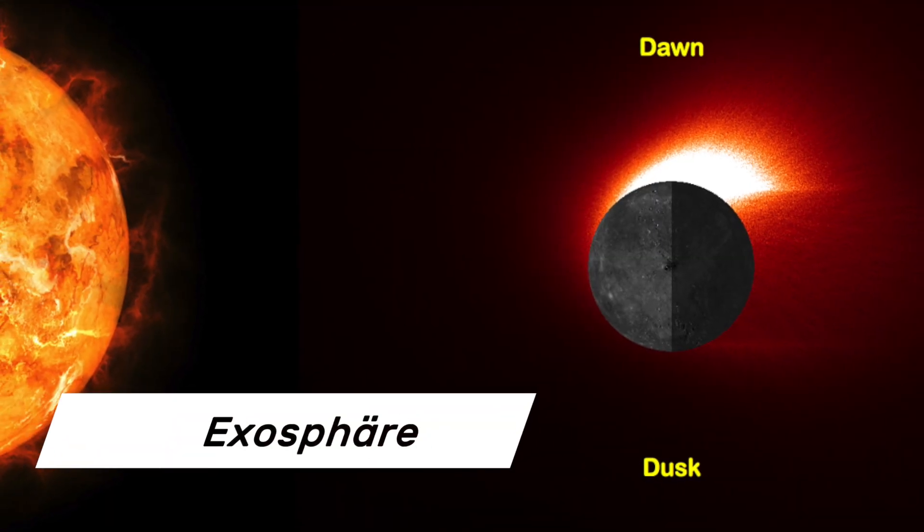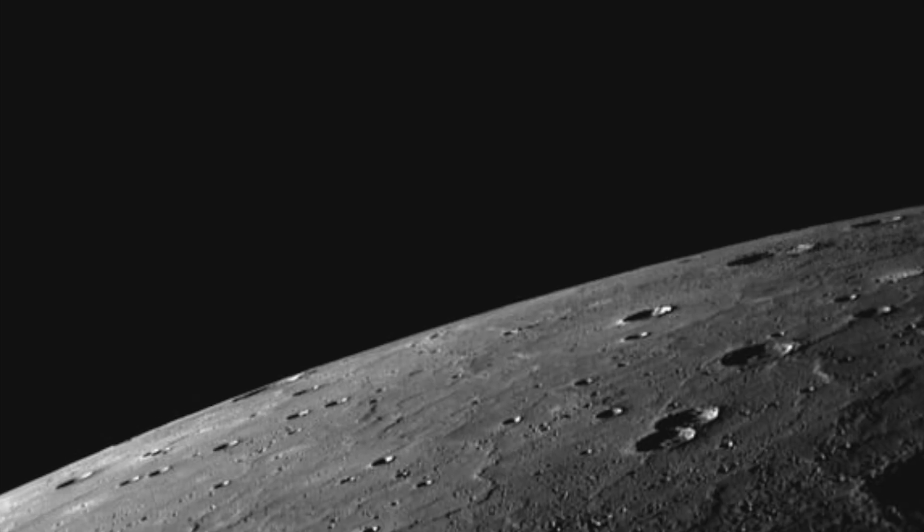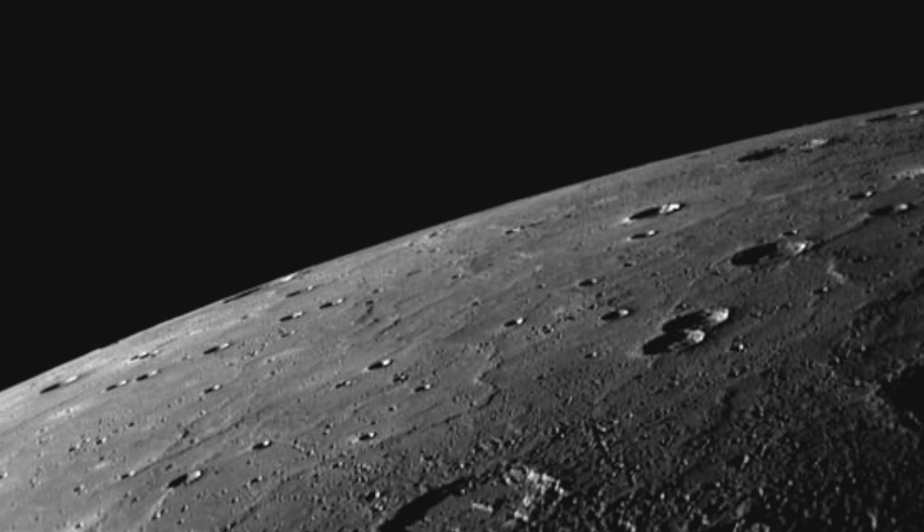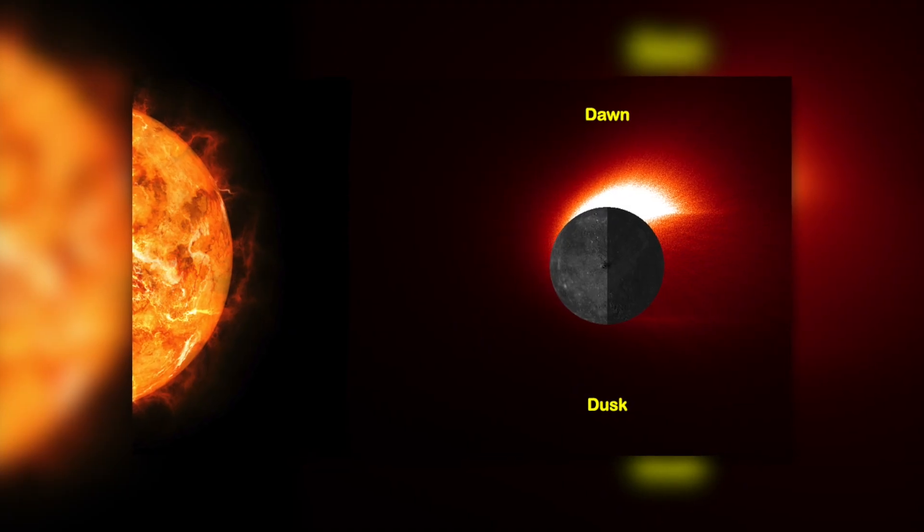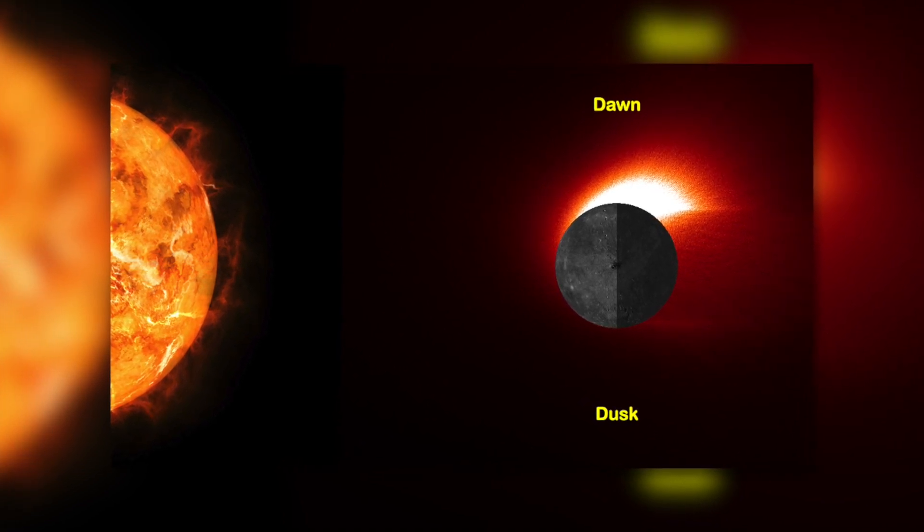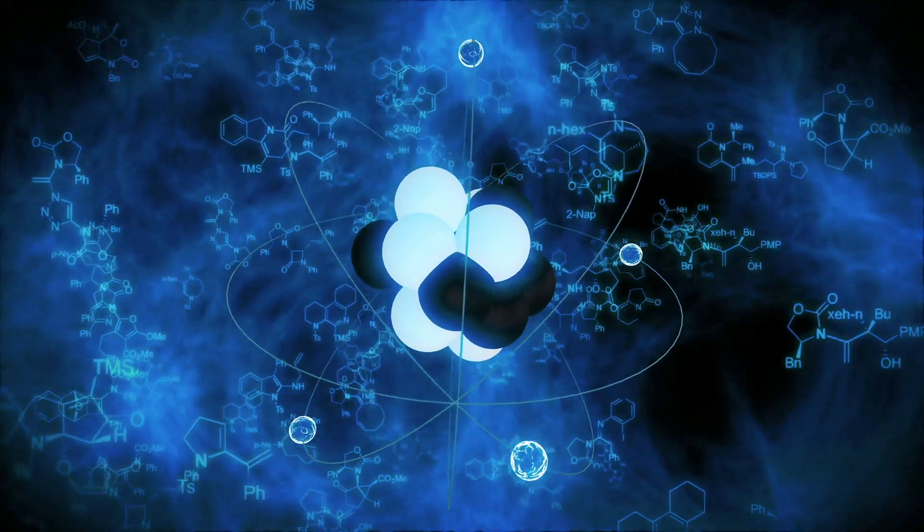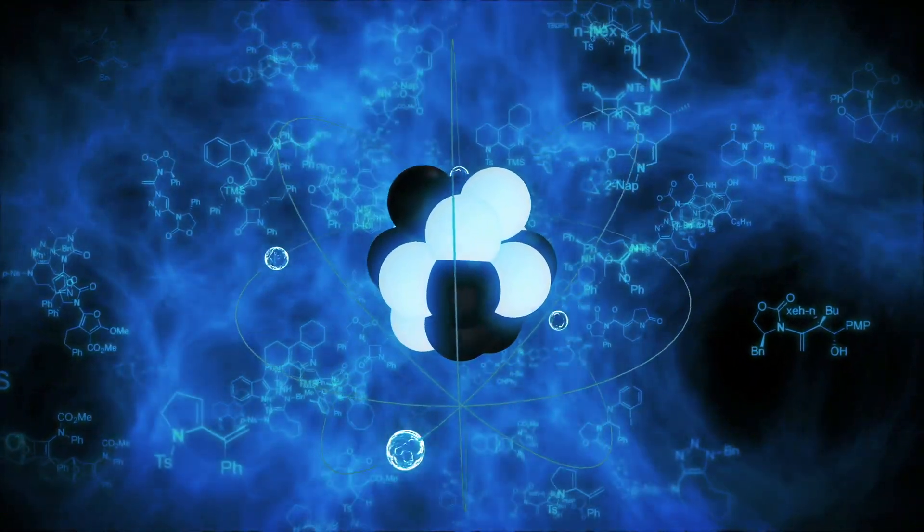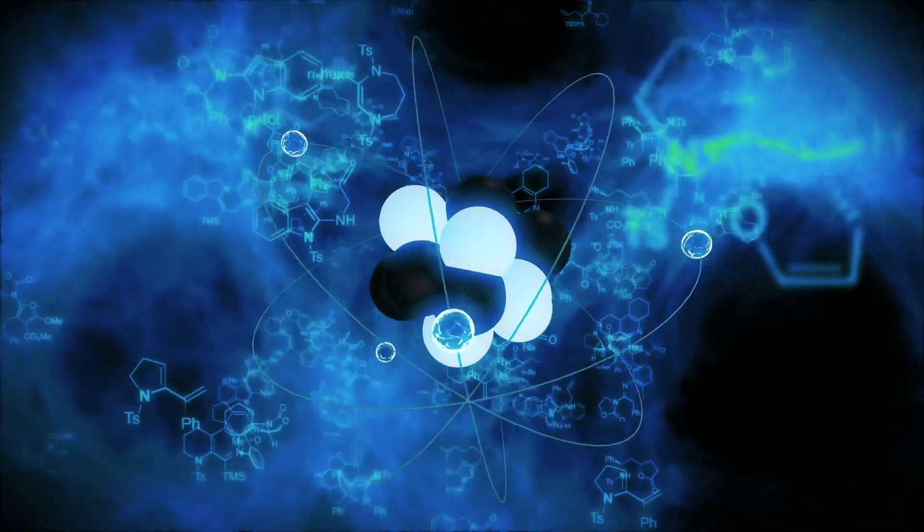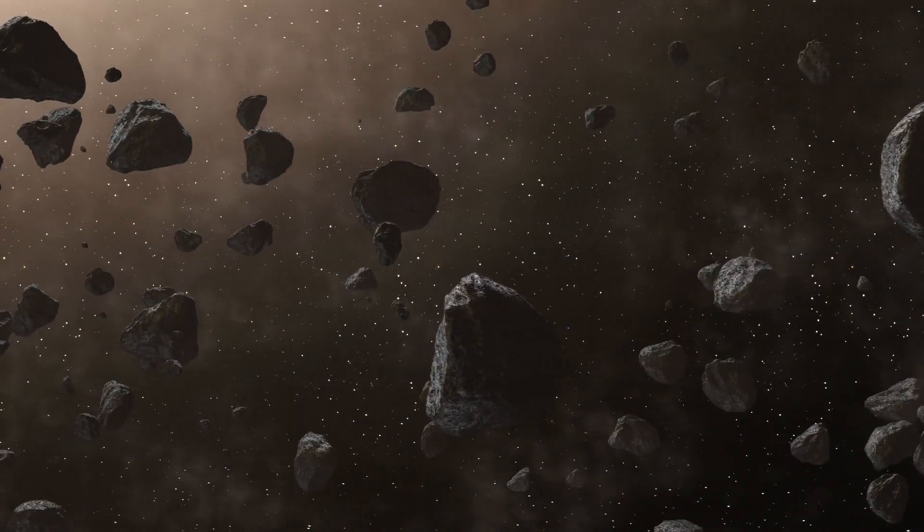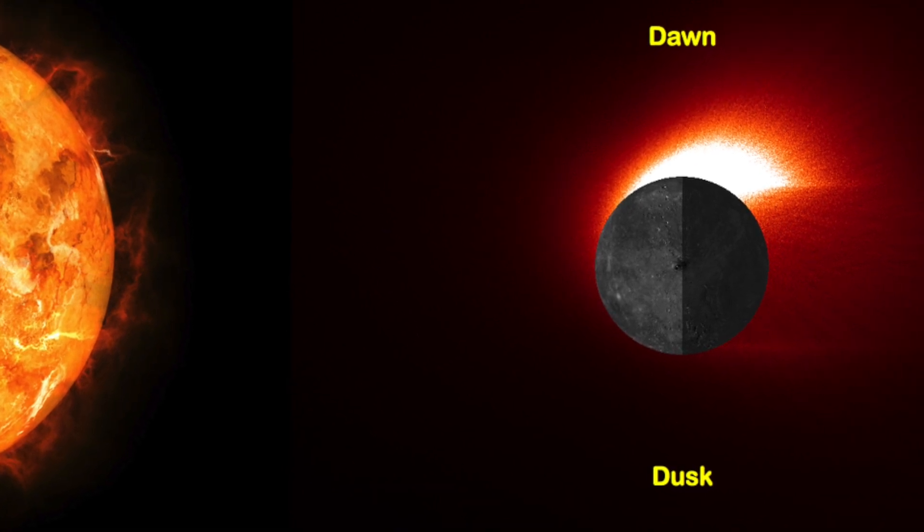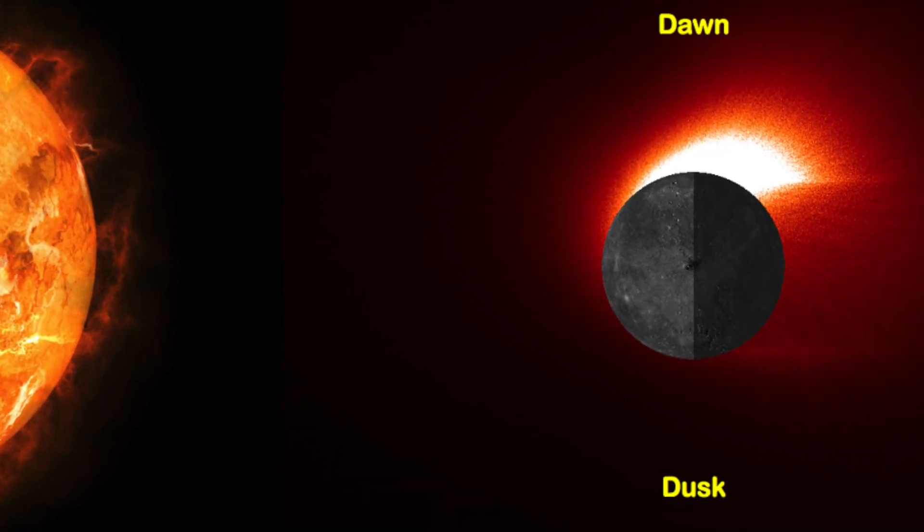Mercury has an exosphere. Mercury has the thinnest atmosphere of all planets in our Solar System. The atmosphere of the planet is so thin that scientists have another name for it, an exosphere. So instead of an atmosphere, Mercury has only a thin exosphere, which consists of atoms that are blown away from the surface by the solar wind and hit by meteoroids. Mercury's exosphere consists mainly of oxygen, sodium, hydrogen, helium, and potassium.